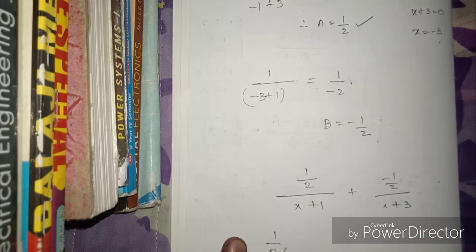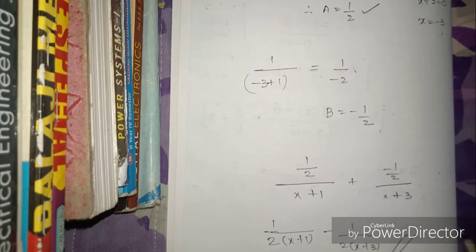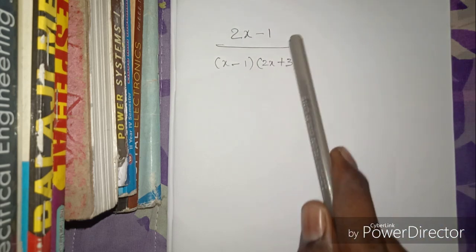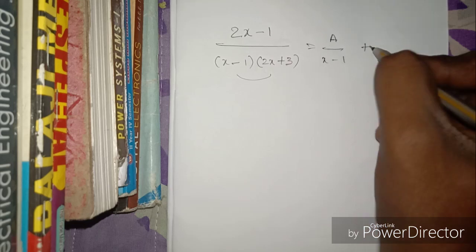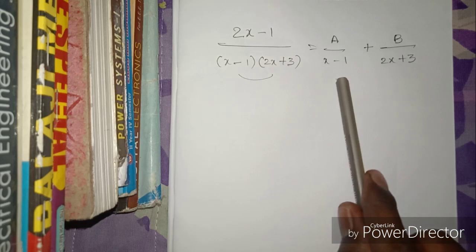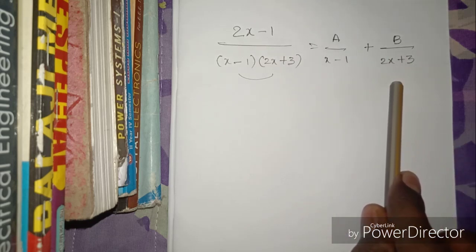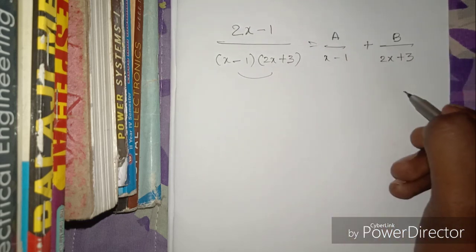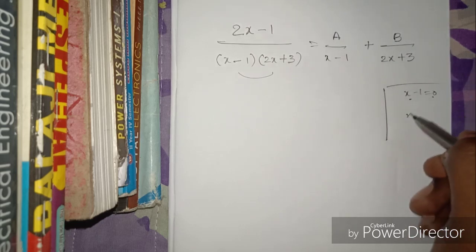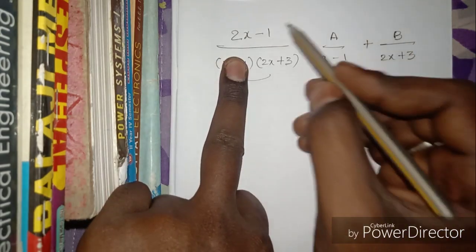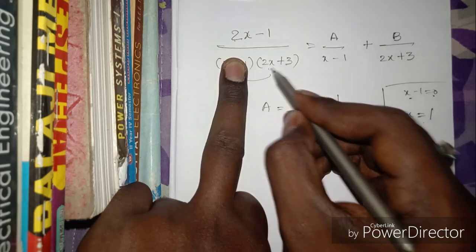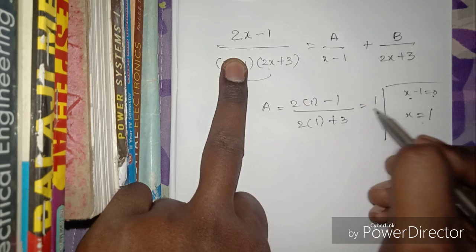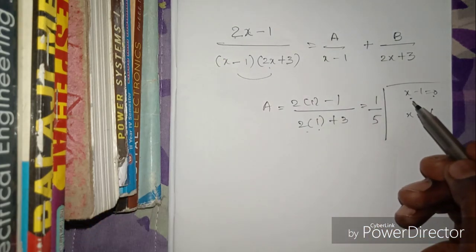Next question: (2x - 1) / [(x - 1)(2x + 3)]. Same approach — we have two terms: A/(x - 1) + B/(2x + 3). To find A, close term (x - 1): set x = 1. Substituting: A = (2×1 - 1) / (2×1 + 3) = 1/5. So A = 1/5.